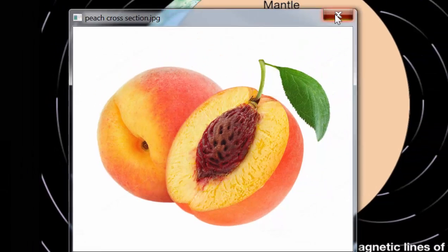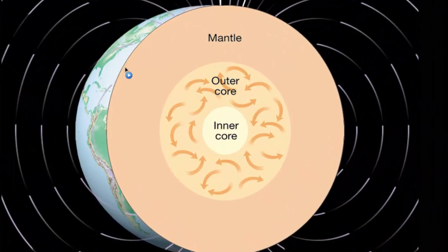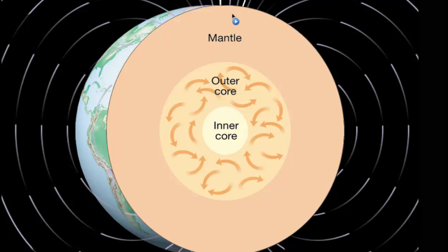So if we take a look at this picture, you'll notice there's a thin layer on the outside — that's our crust, just like the skin of the peach. And then we have our mantle, which is like the meat of the peach, considerably thicker than the crust. And then once we get through the mantle, we reach the core.